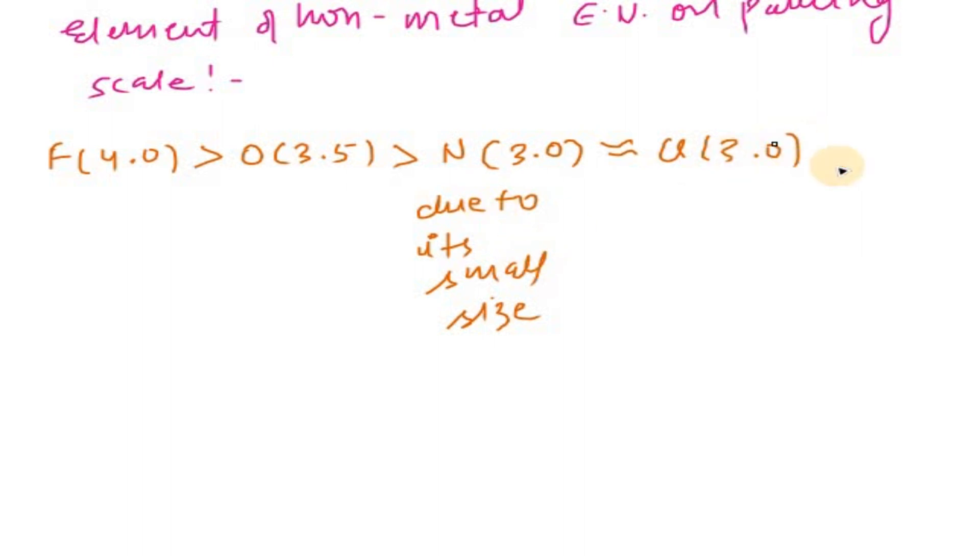Then bromine. And after bromine we come to carbon, which is 2.5. After carbon, that is also equal to sulfur. Sulfur is also 2.5. And that is iodine, which we also consider as 2.5. Again, phosphorus we consider as 2.15.